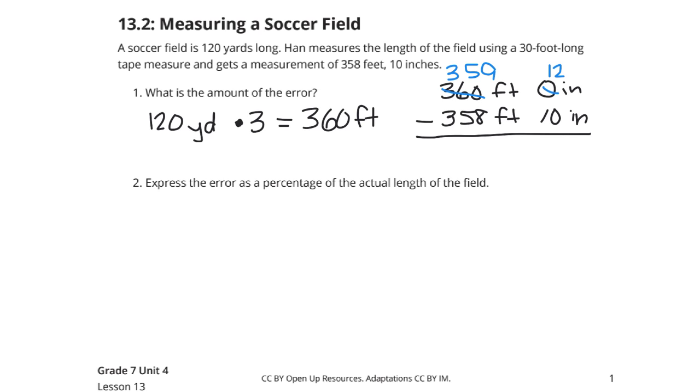So 12 inches minus 10 inches is 2 inches, and 359 feet minus 358 feet is just 1 foot.